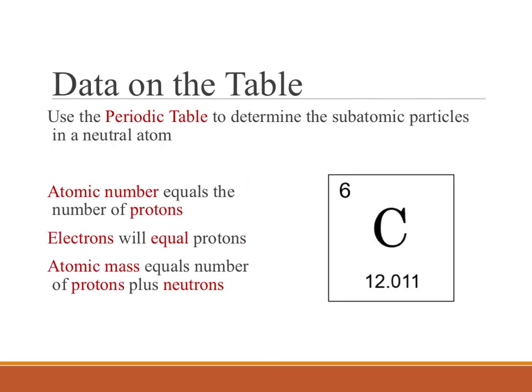Your periodic table is very helpful in learning about the subatomic particles that are present in these atoms. So if you are looking at a typical box from a periodic table, as I have illustrated here, the atomic number, which in this case is found in the upper left-hand corner, is equal to the number of protons.